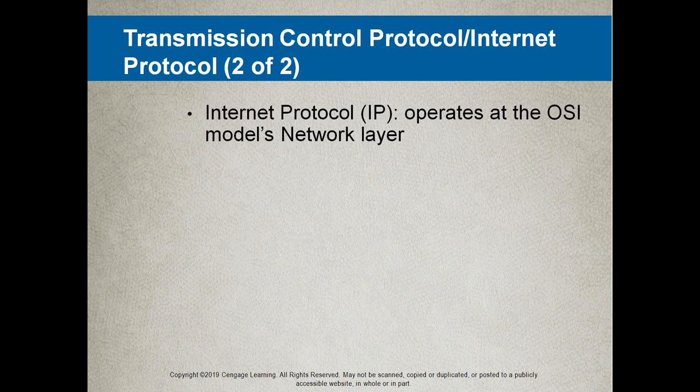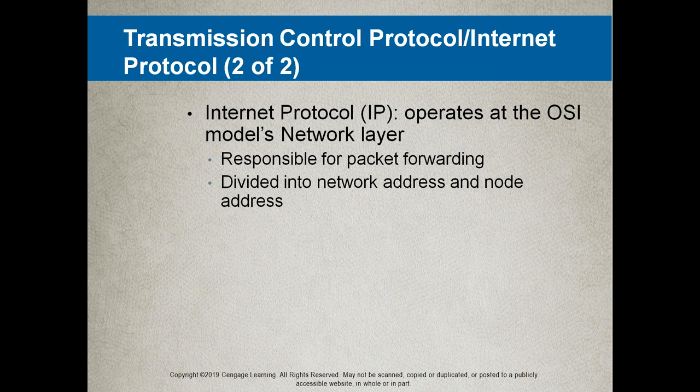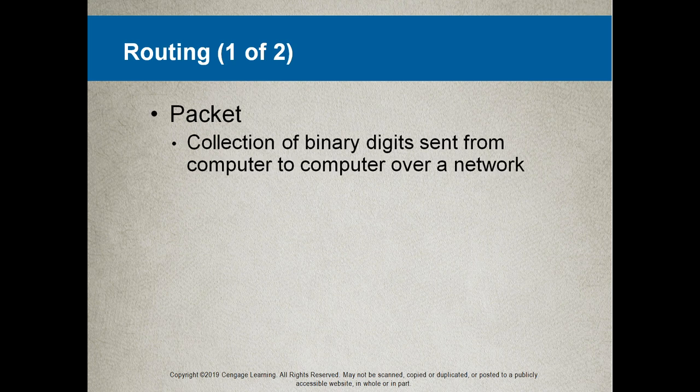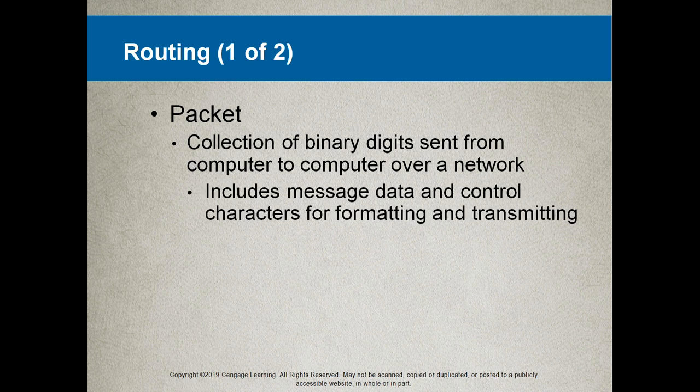Internet Protocol — the IP bit — operates at the OSI model's network layer. It is responsible for packet forwarding and an IP address is divided into a network address and a node address. A packet is a collection of binary digits sent from one computer to another over a network, and it includes message data and control characters for formatting and transmitting.